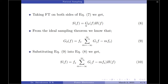In equation 8, the RHS contains a term G_delta(f). I am going to borrow an equation from the ideal sampling theorem for the transfer function of the sampled signal: G_delta(f) equals fs into summation m from minus infinity to plus infinity of G(f − mfs). This is directly taken from the ideal sampling theorem. Now substituting equation 9 into the RHS of equation 8, we get S(f) equals that RHS multiplied by H(f).